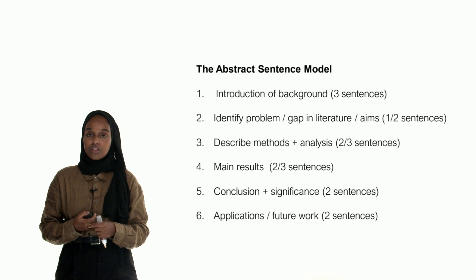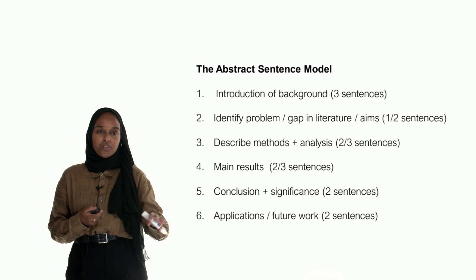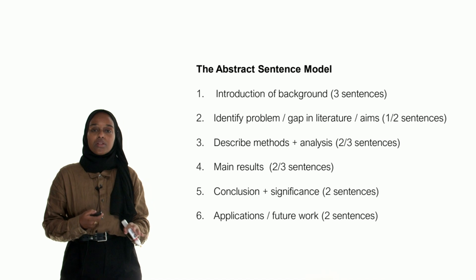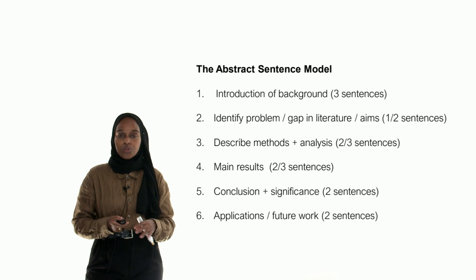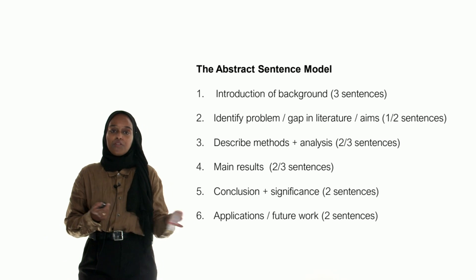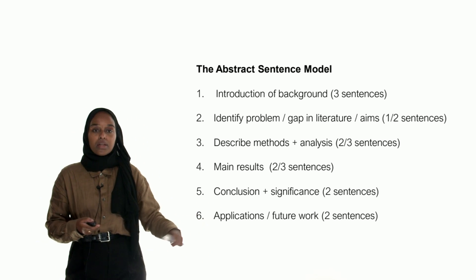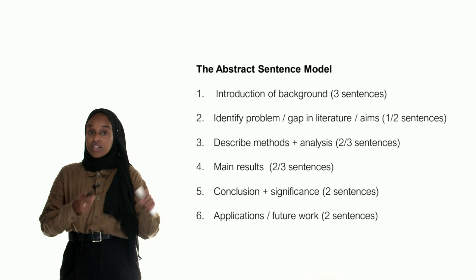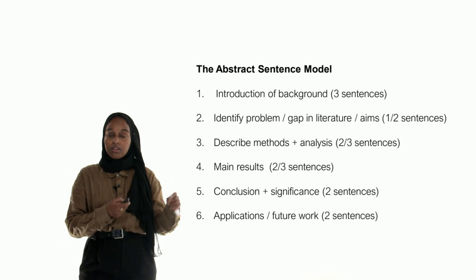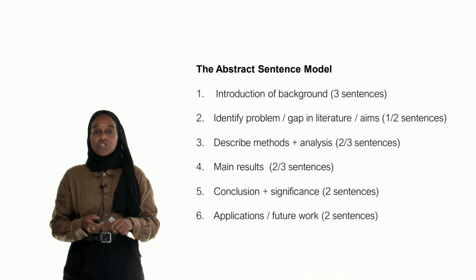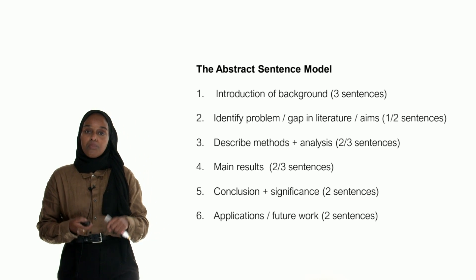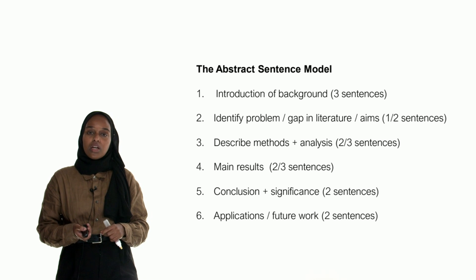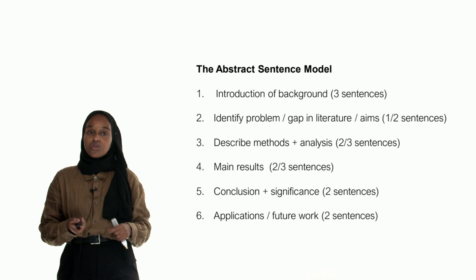Then the applications and future work. The sentence numbers I've given are a guide — don't focus on them too much. You can skip the applications and add a bit more in the results if needed. Ultimately, it's a guide in terms of the ratios you want to include when it comes to your abstract.